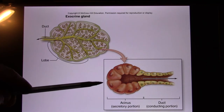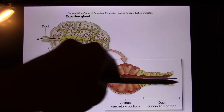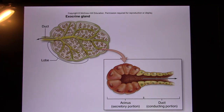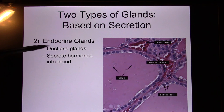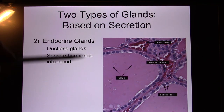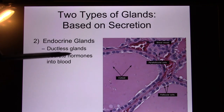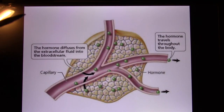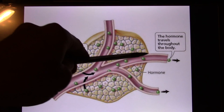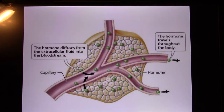That is the structure of an exocrine gland — they release through a duct. Now let's look at endocrine glands. Endocrine glands have no duct — they are ductless. They secrete hormones, which are molecules released directly into the blood and carried throughout the body. That is the endocrine gland.